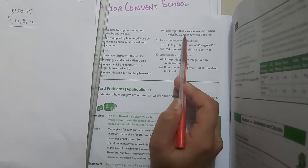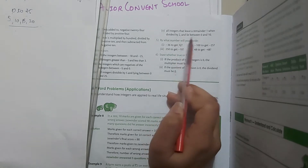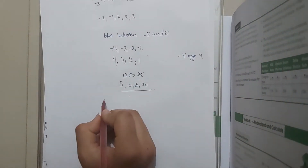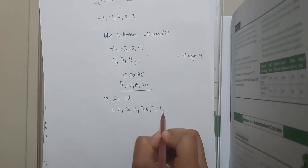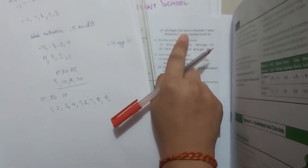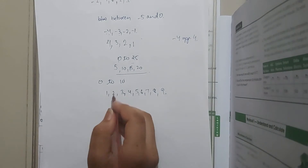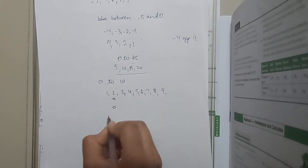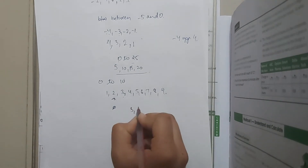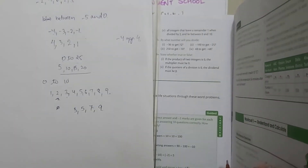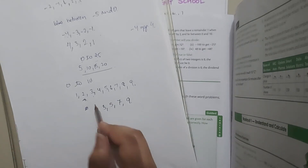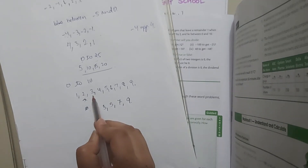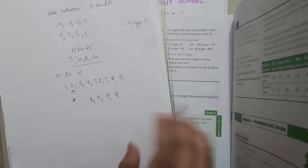Next: all the integers that leave a remainder of 1 when divided by 2, and lie between 0 and 10. From 0 to 10 we have: 1, 2, 3, 4, 5, 6, 7, 8, 9. We cannot divide 1 by 2 evenly, so we start from 2. When we divide 2 by 2, the remainder is 0. When we divide 3 by 2, the remainder is 1 — so 3 qualifies. Similarly, 5, 7, and 9 also leave remainder 1. Our answer is 3, 5, 7, and 9.